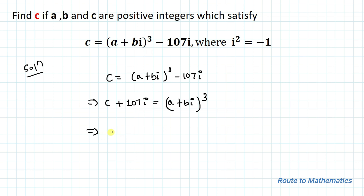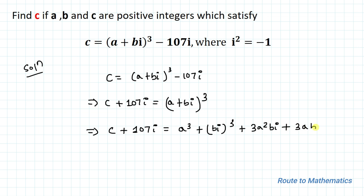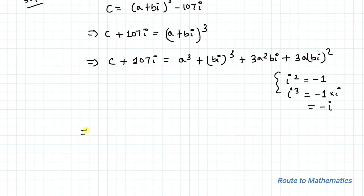In the next step we expand a plus bi whole cube. So we have c plus 107i equals a cubed plus bi cubed plus 3a squared times bi plus 3ab times i squared. Since i squared equals minus 1, i cubed equals minus 1 times i, which is minus i.